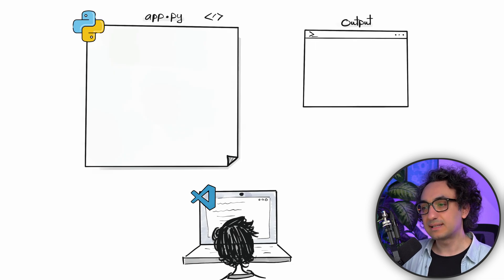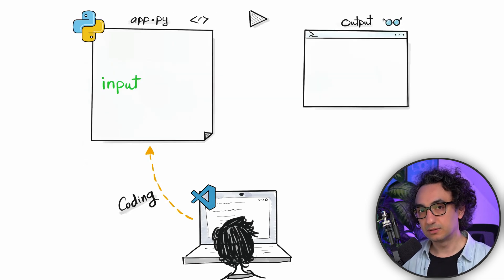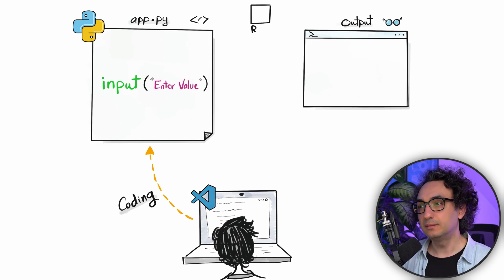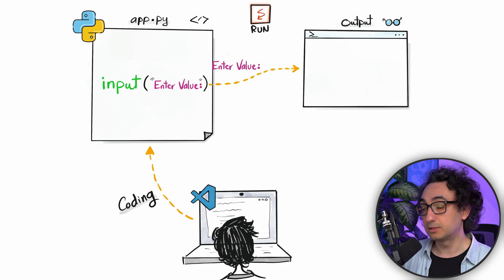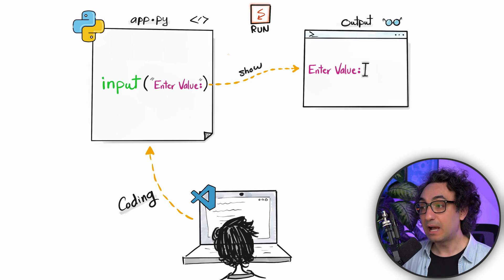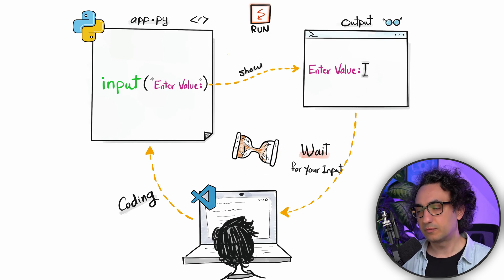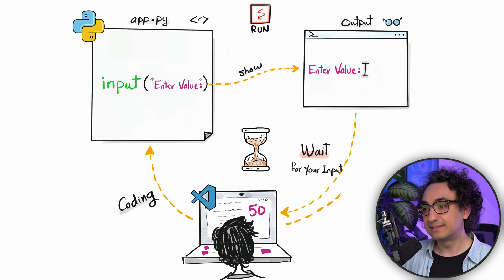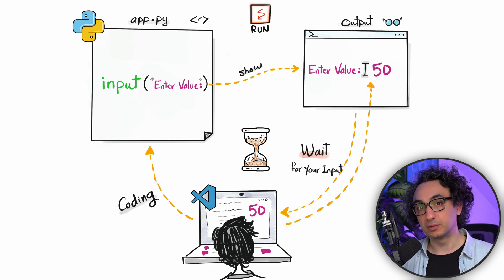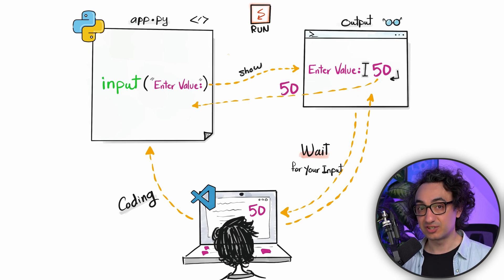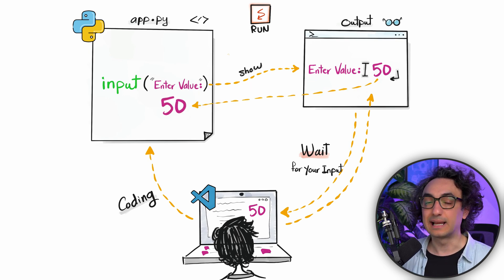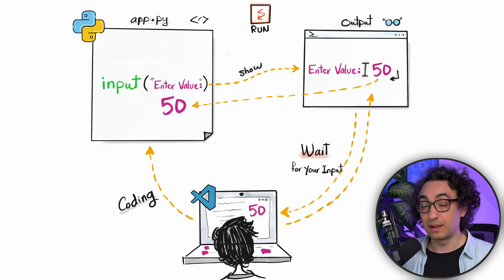Now let's understand how this exactly works behind the scenes. We write in our code 'input' and in between parentheses we write a message, for example 'enter a value'. When you execute it, Python takes the message and displays it in the output. Then everything pauses and waits for input from the user. The application waits until the user types something — for example, 50 — and once the user hits enter, the value 50 is returned back to our code.